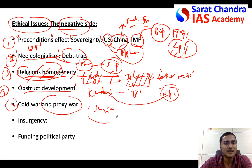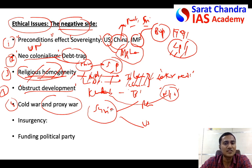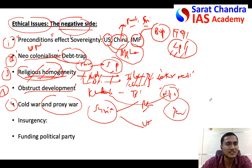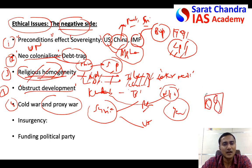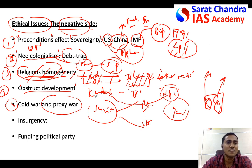Another ethical issue is proxy war or cold war. For example, in Syria, both Russia and the USA are funding opposite political groups. This kind of international funding is essentially a proxy war or cold war between Russia and USA. The same thing is happening in the Yemen crisis, and in many countries certain political parties take funding from the USA, China, or Russia. This kind of international funding is unethical because it is about power politics, not development.